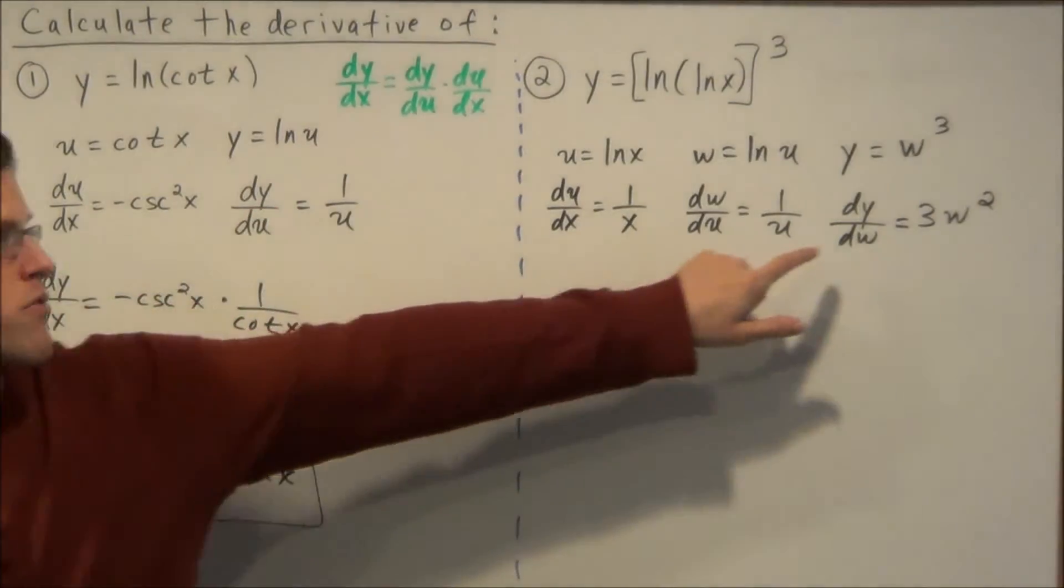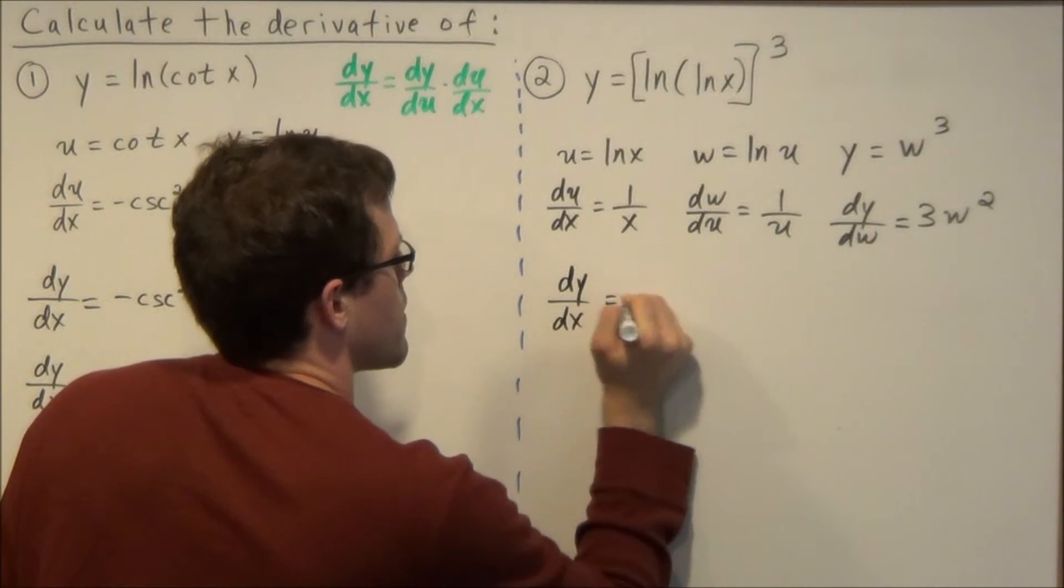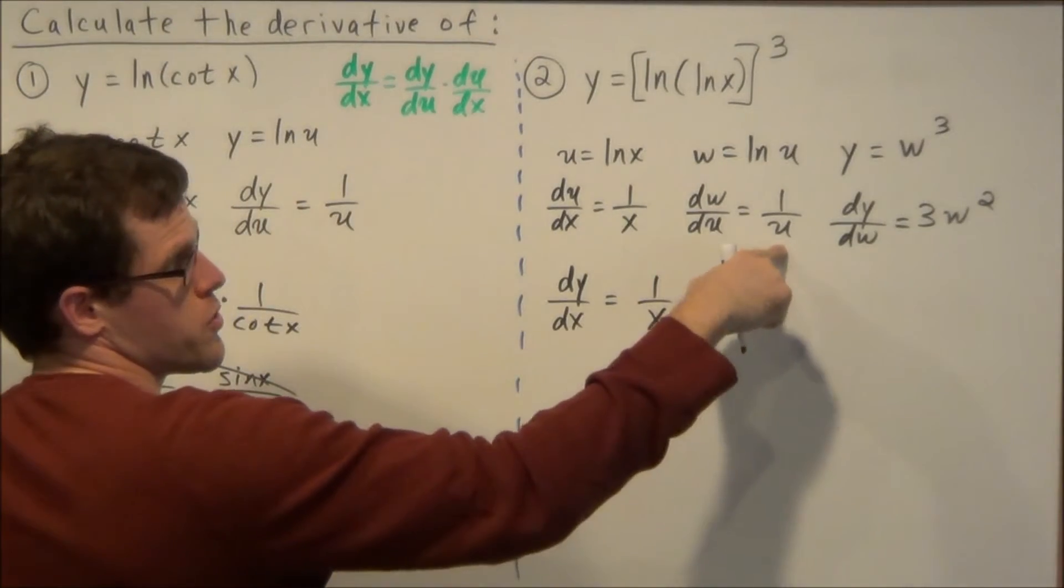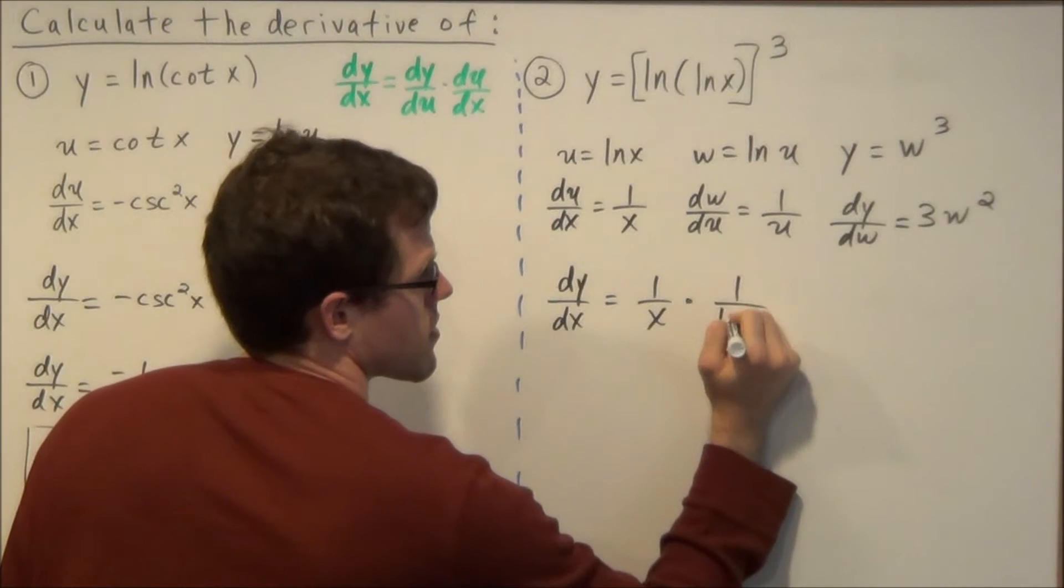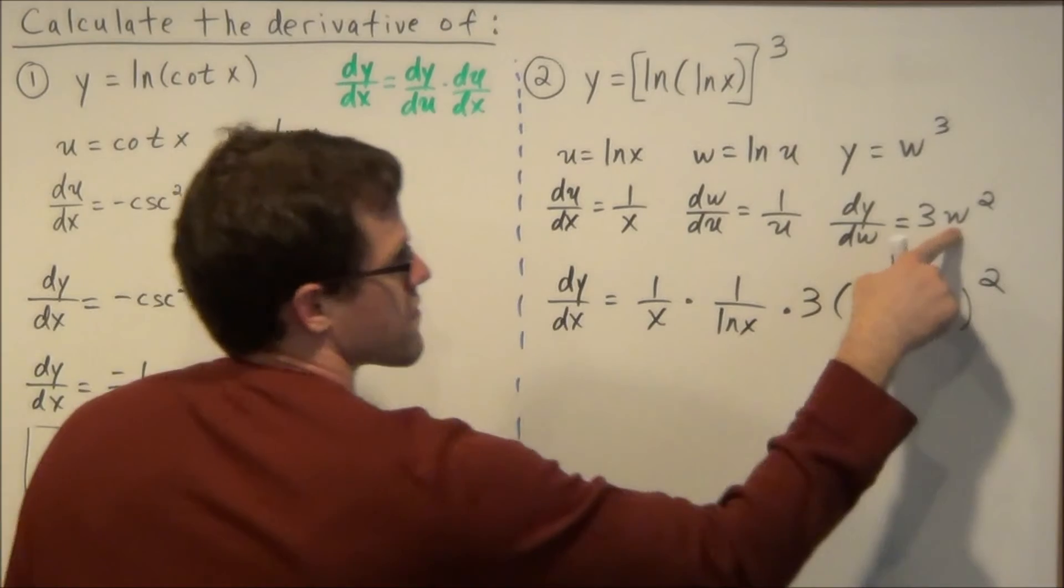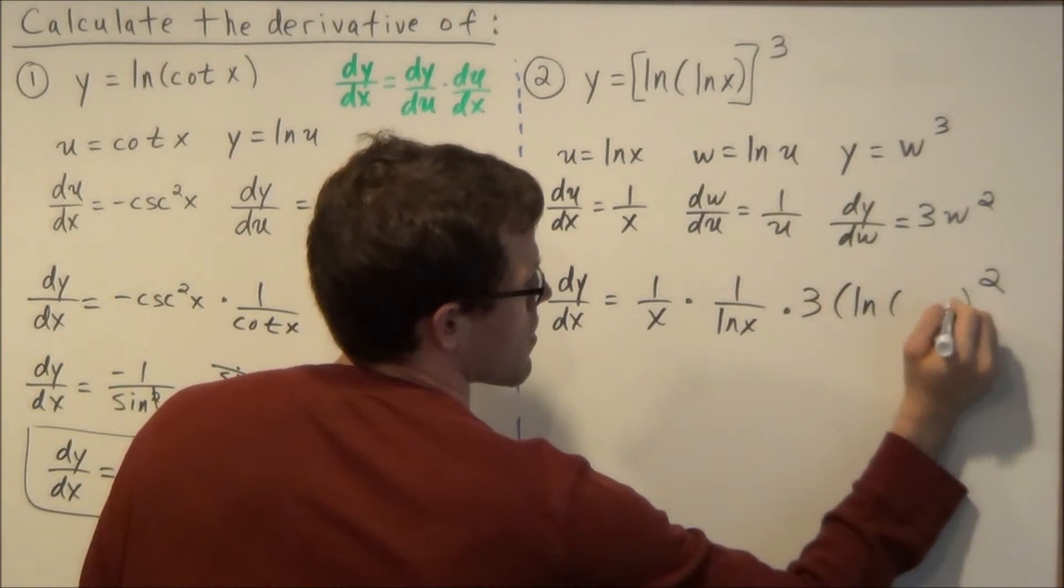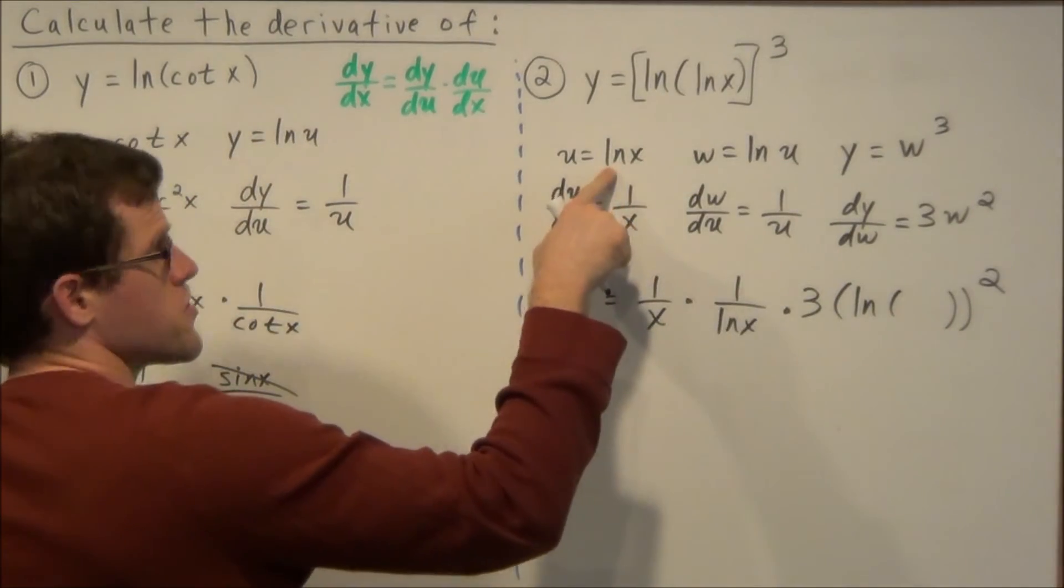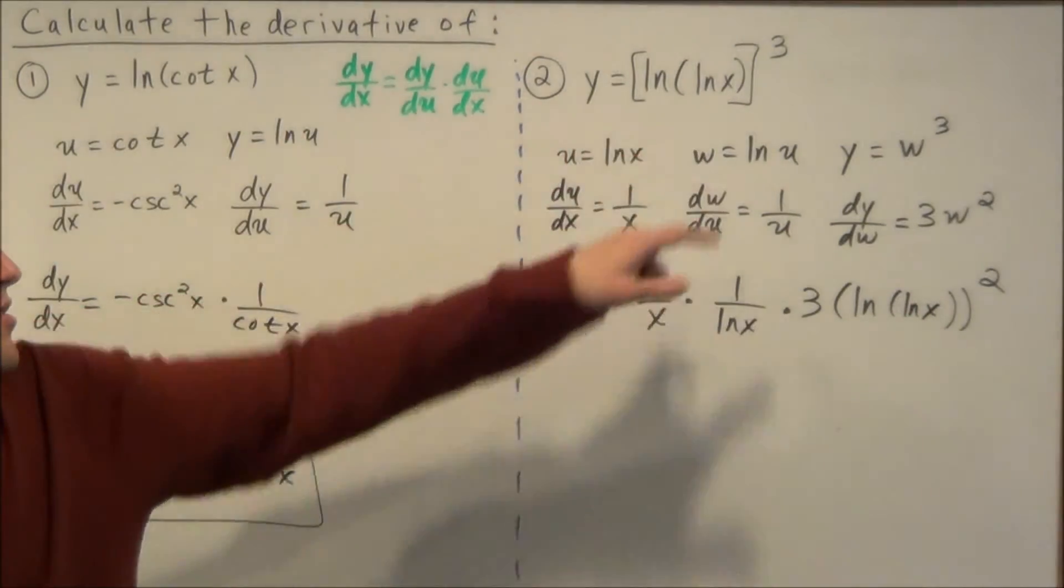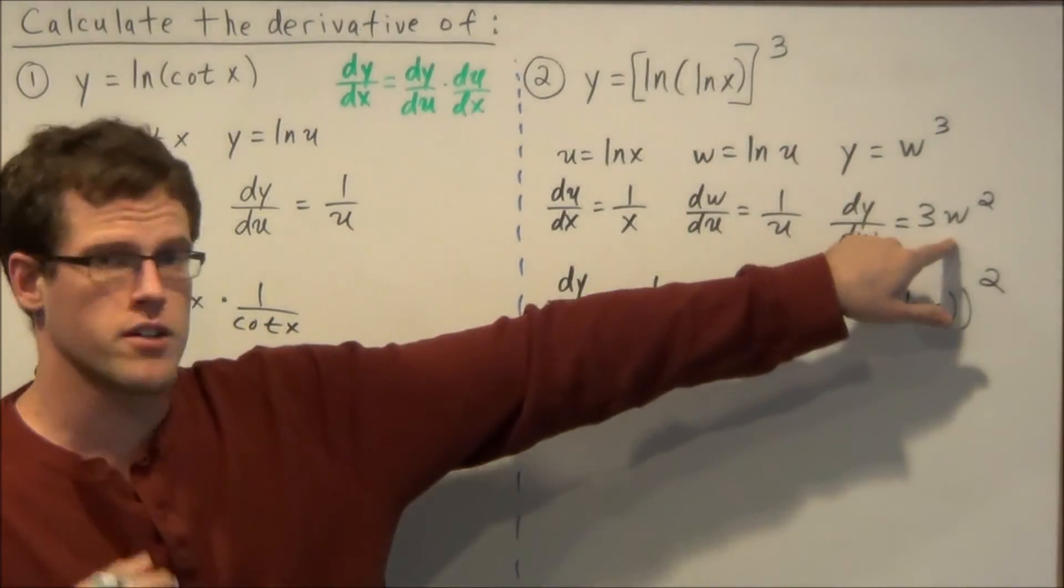So then dy dx for the second example is equal to one over x times one over u, where u is equal to natural log of x, and instead of u, we're going to replace u with natural log of x. Because remember, our final answer to both problems have to be all in terms of x, so at the last step, you have to replace the variables we defined here.